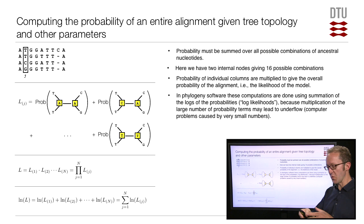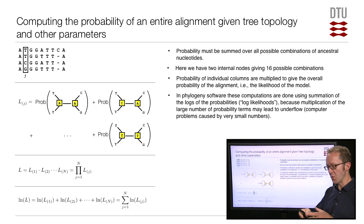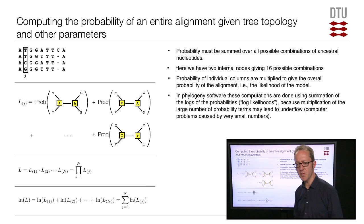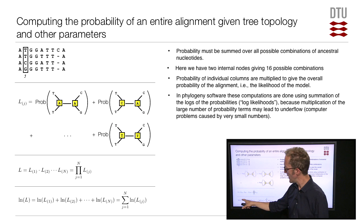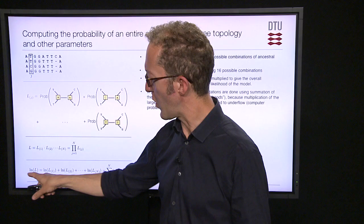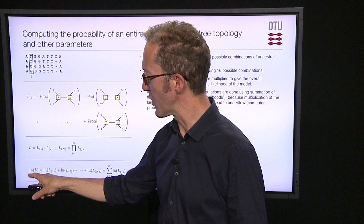A small computational detail: each of these are probabilities between zero and one. If you have a very large alignment and multiply many small numbers together, you can run into underflow errors. To avoid this, most phylogeny software computes log likelihoods instead — taking the natural logarithm of the likelihood equation. Instead of multiplying likelihoods, you sum log likelihoods, since the logarithm of a product is the sum of the logs of each term. This is why you often encounter log likelihoods instead of likelihoods.